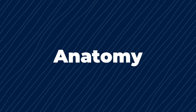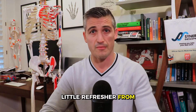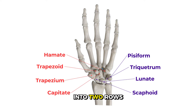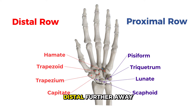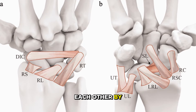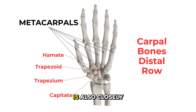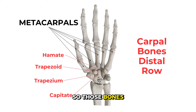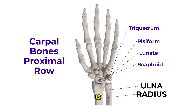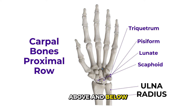So the anatomy. The eight carpal bones are divided into two rows: proximal, or closer, and distal, further away. There are four bones in each row. These bones are connected to each other by various ligaments. The distal row is closely attached to the metacarpals, so those bones don't move much. The proximal row does move a lot. No muscles or tendons attach to the proximal row, so their motion is very much dependent on the forces that go through them from tendons pulling above and below the wrist.